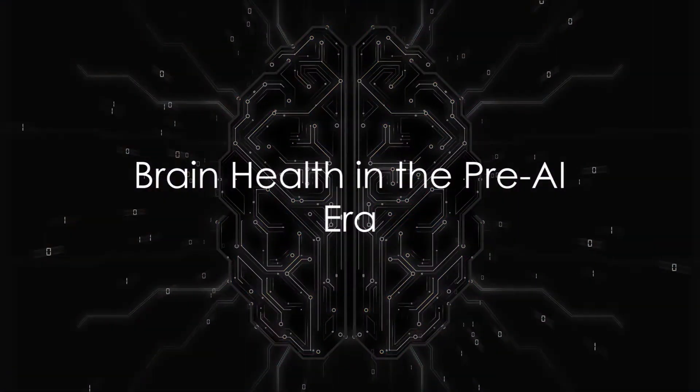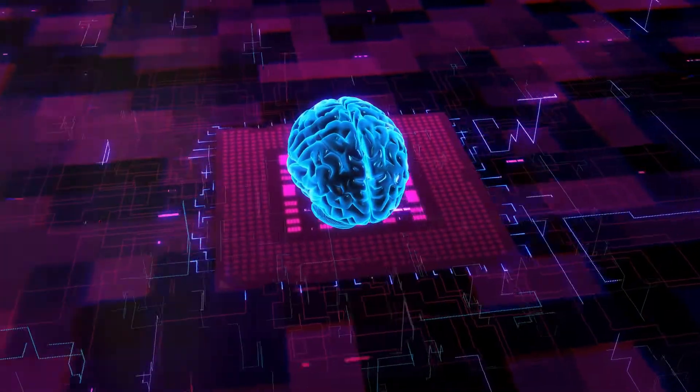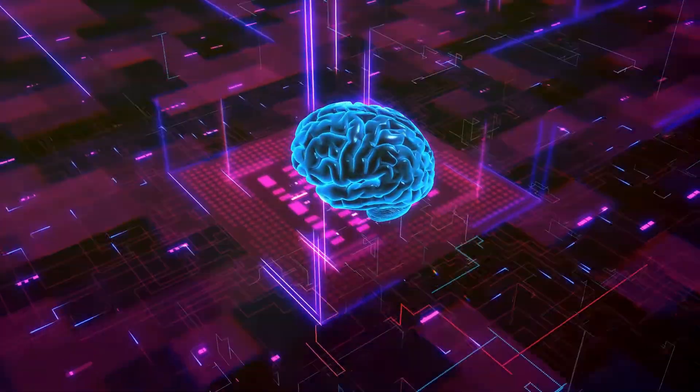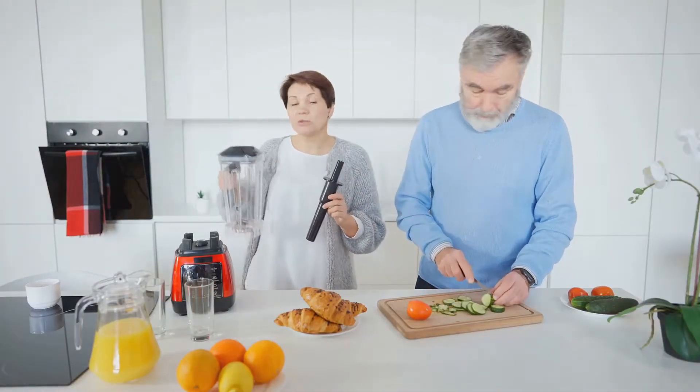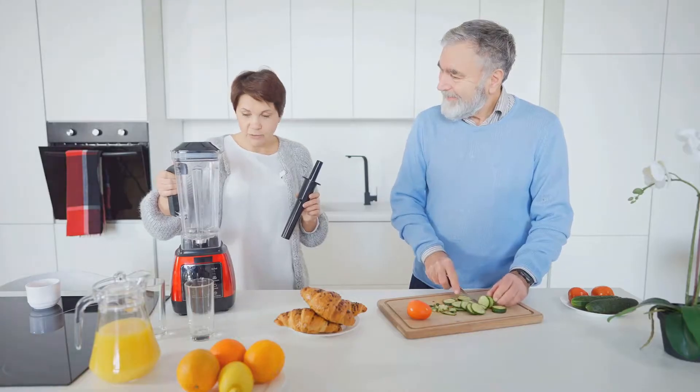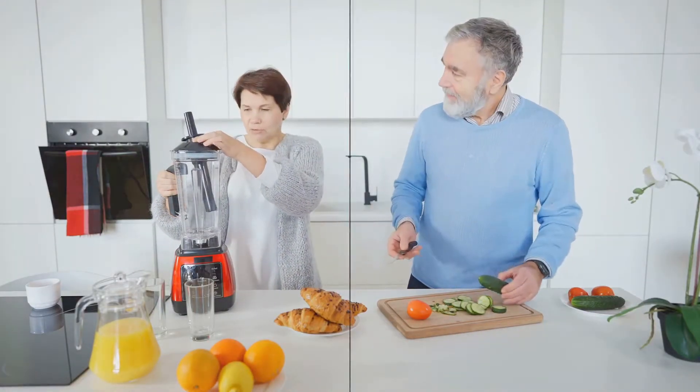Looking back at the pre-AI era, brain health was a relatively straightforward concept. It primarily revolved around memory, concentration, and cognitive abilities. The focus was on maintaining a healthy lifestyle, consuming a balanced diet, and engaging in physical and mental workouts to keep our brains sharp and agile.